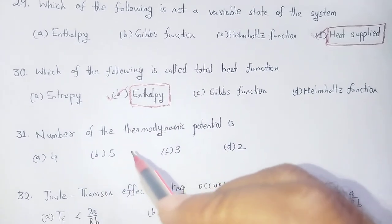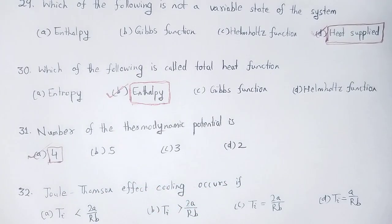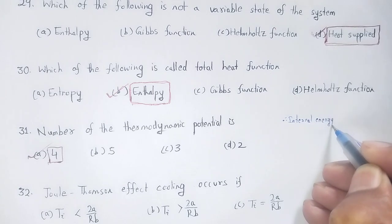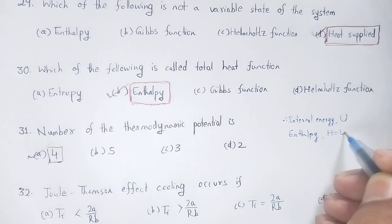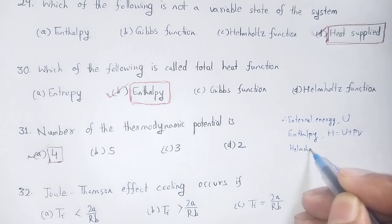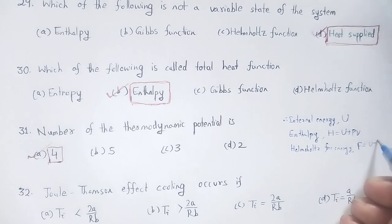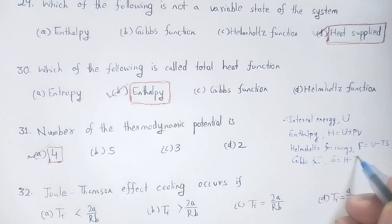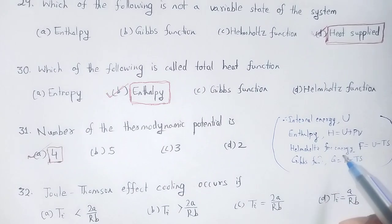Next question: Number of thermodynamic potentials. Internal energy is represented by U. Enthalpy H is equal to U plus PV, where U is internal energy, P is pressure, and V is volume. Helmholtz free energy F is equal to U minus TS. Gibbs function G is equal to H minus TS. So the four thermodynamic potentials are: internal energy, enthalpy, Helmholtz free energy, and Gibbs function.